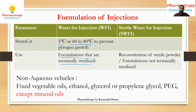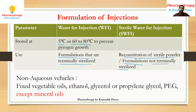For formulations which are not terminally sterilized, we must use sterile water for injection because it is absolutely sterile. The key example is reconstitution of sterile powder: when a sterile powder is reconstituted for administration, it should always be reconstituted with sterile water for injection (SWFI) and not with water for injection. These are the most important parameters and the clear-cut differentiation between water for injection and sterile water for injection.